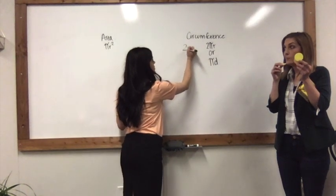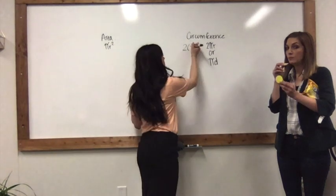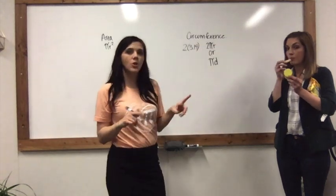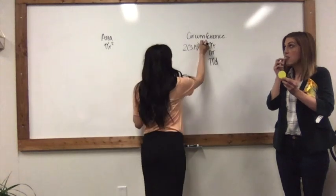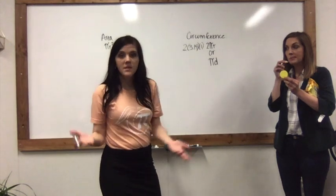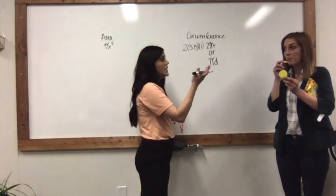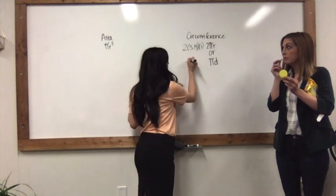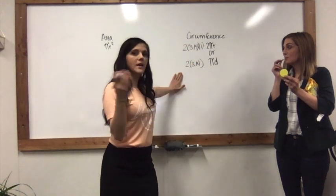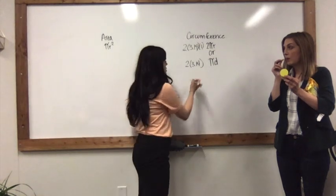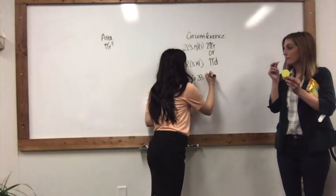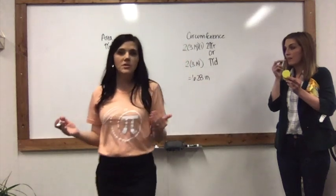The formula is two times 3.14 — we're going to round Pi to 3.14 — times the radius, which for this circle was just one, because the diameter was two. Or, we could use the diameter: Pi times diameter, which was two. So two inches times 3.14. Either way you do it, you're going to get the same thing — it would still be 6.28. And because it is circumference, our units are just going to be inches, not squared.